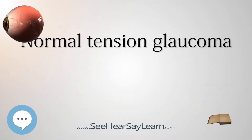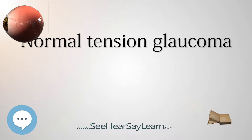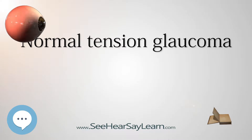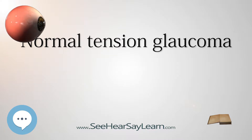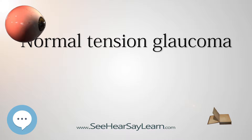Normal tension glaucoma, NTG, is an eye disease, a neuropathy of the optic nerve, that shows all the characteristics of traditional glaucoma except one: the elevated intraocular pressure, IOP, the classic hallmark of glaucoma, is missing. Normal tension glaucoma is in many cases closely associated with general issues of blood circulation and of organ perfusion like arterial hypotension, metabolic syndrome, and Flammer syndrome.